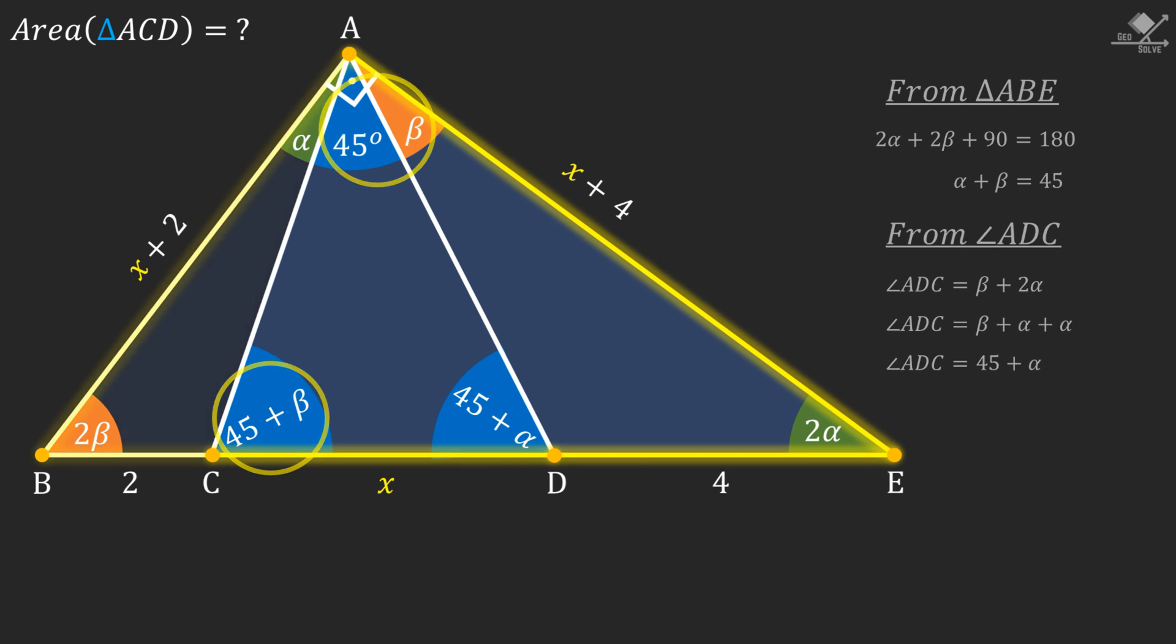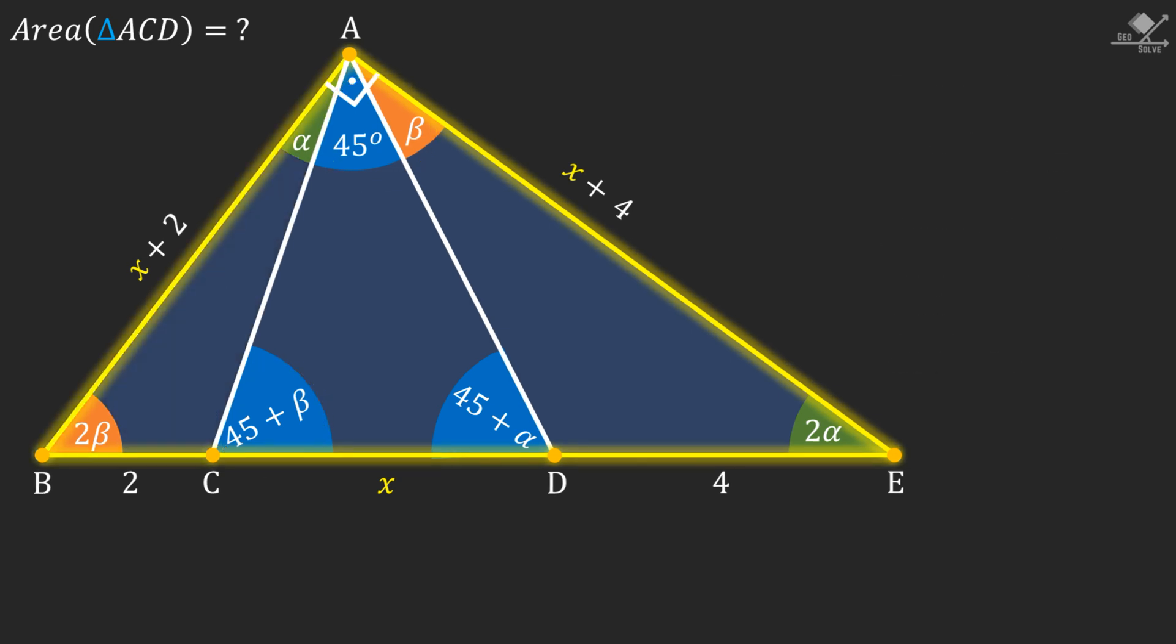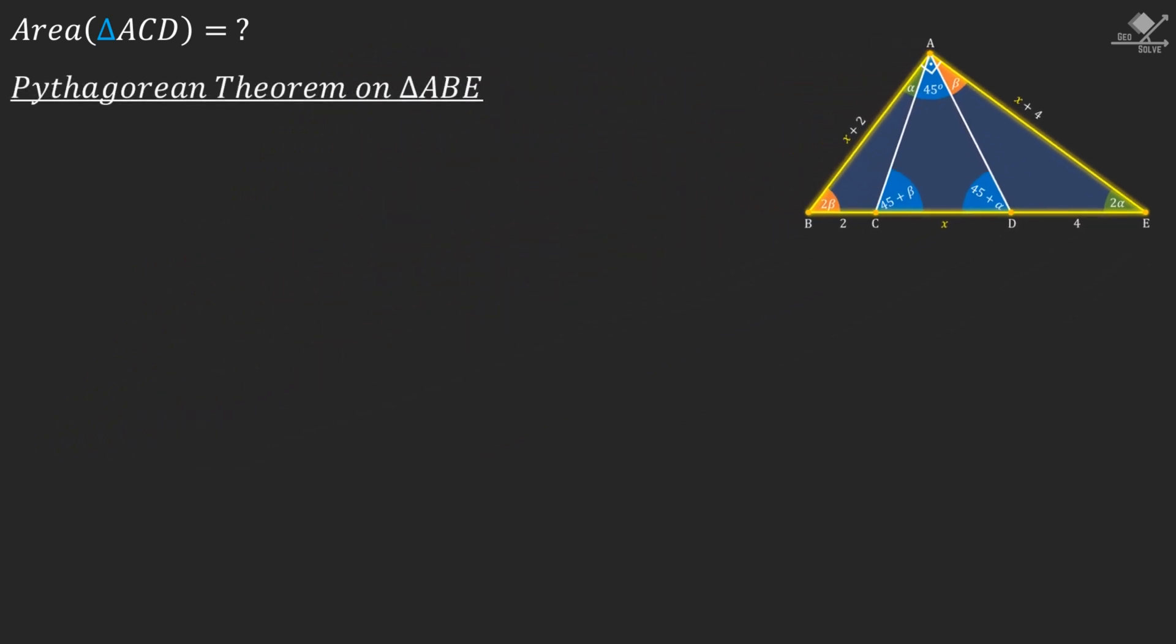Now we know all three side lengths of triangle ABE in terms of x. And now let's apply Pythagorean theorem on triangle ABE. And we will have (x + 2)² + (x + 4)² = (x + 6)².